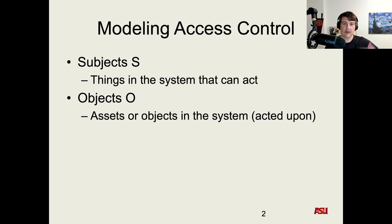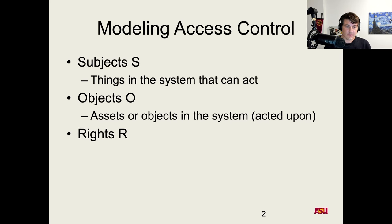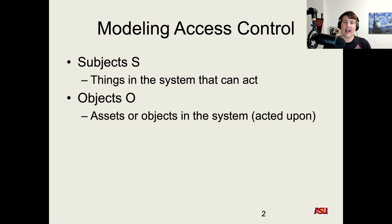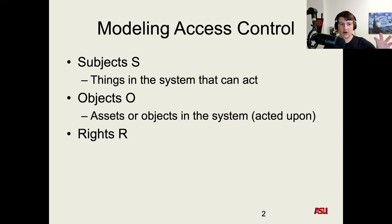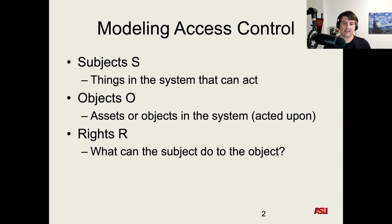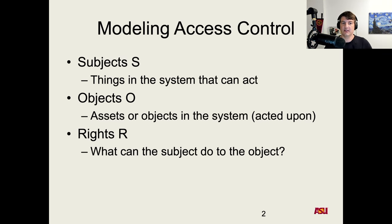Objects are assets or resources in the system that subjects can act on. Subjects do things — but what are they doing those actions on? That's where we get to the set R of rights in the access control model: what actions can subjects take on objects. This set describes all possible operations. You can describe all the subjects, all the objects, and all the rights.